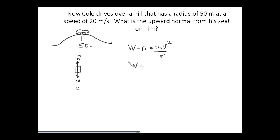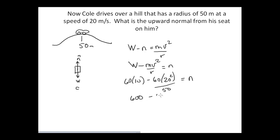Rearranging: N = W − mv²/r, so the normal force is less than his weight — just the opposite situation. Substituting: N = 60×10 − 60×(20²/50) = 600 − 480 = 120 Newtons. At the top of the hill he feels a push from his seat of only 120 Newtons, about 27 pounds, even though he normally weighs 132 pounds. He feels much lighter, which produces that strange stomach feeling as you go over a hill.